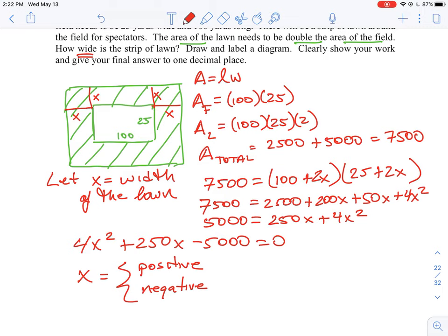So one of these will probably be what's called the extraneous root to the question. Okay, so for example, we are looking to find the width of the lawn. So would it make sense to have a negative root if that's the one that appears? And the answer is no, you don't want to have a negative distance.